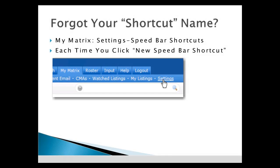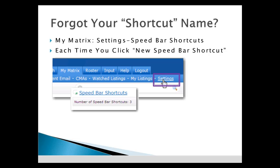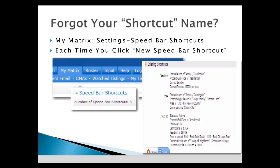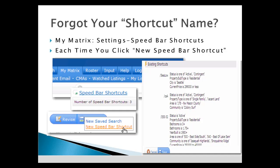Forgot your shortcut name? Click My Matrix, then Settings, and the Speed Bar shortcuts link to view the names, descriptions, and criteria. Also, when you click Save As and choose New Speed Bar shortcuts on your search results screen, all of your shortcuts will be displayed.